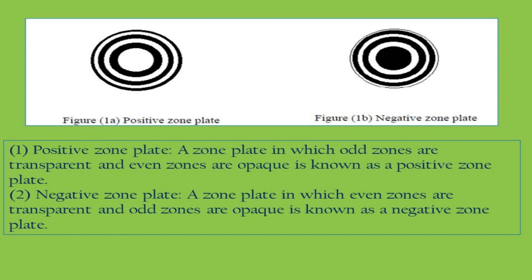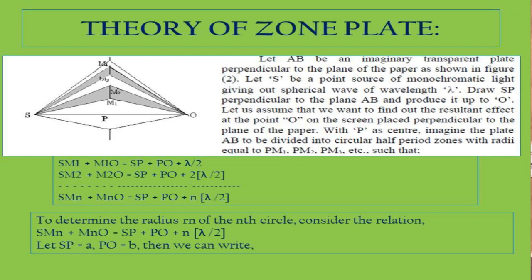In this diagram, A is the distance between the source S and point P, and B is the distance between P and O. The first half period zone PM1 is transparent and M1M2 is opaque, and so on. For the first half period zone, SM1 plus M1O equals SP plus PO plus lambda by 2, meaning the path length changes by lambda by 2. For the second zone, SM2O equals SP plus PO plus 2·(lambda/2), that is lambda, and so on.